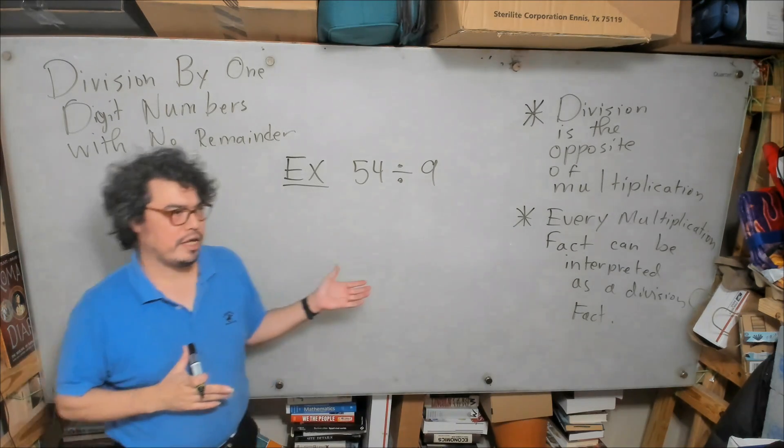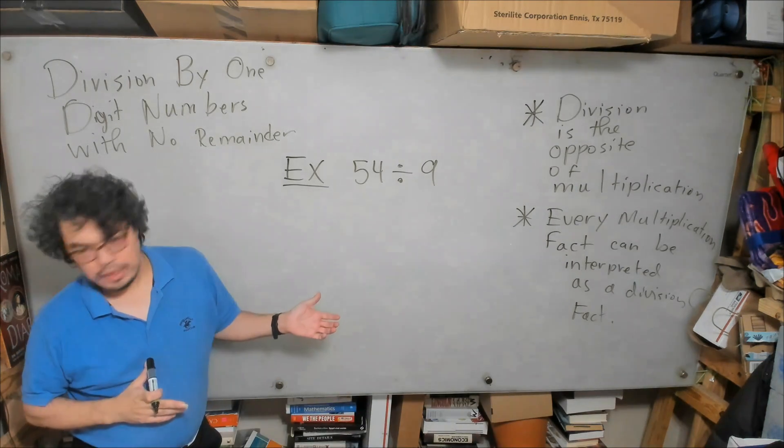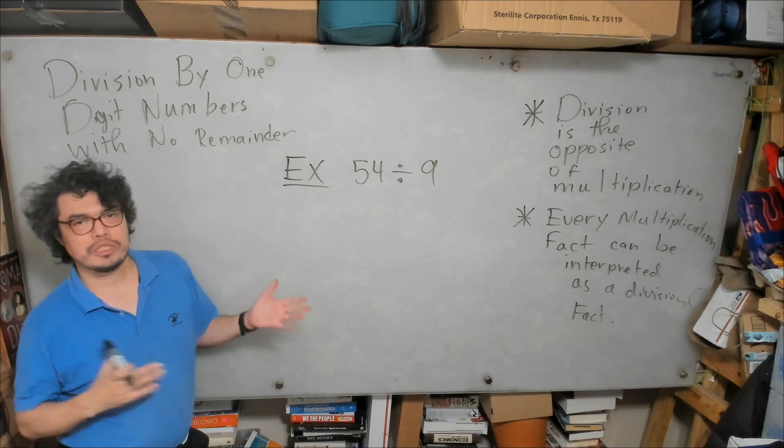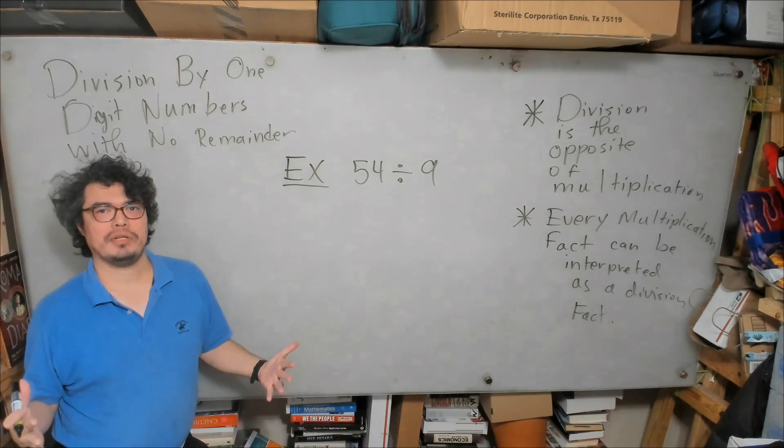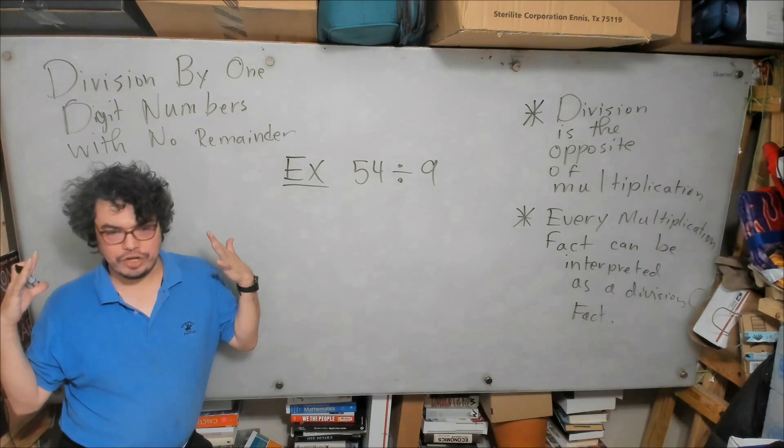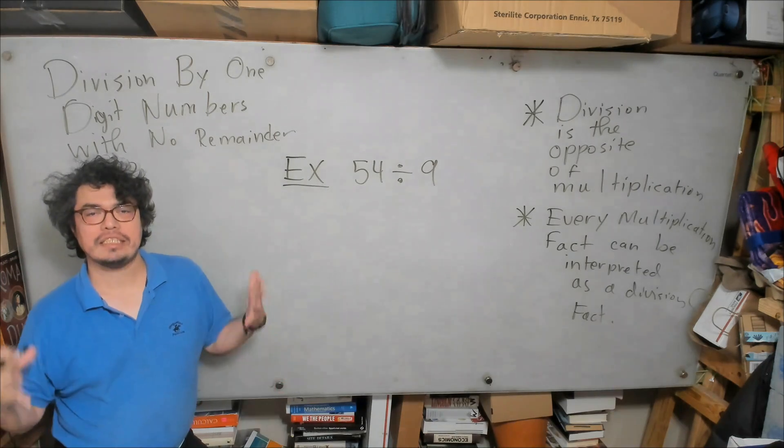Let us look at this example together. The first thing we remember is division is the opposite of multiplication and we know that we can interpret every multiplication fact as a division fact.